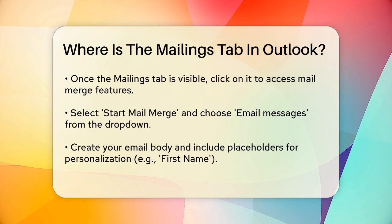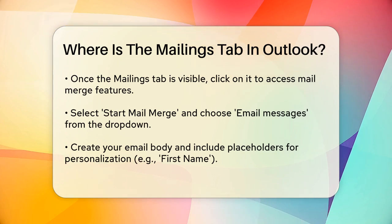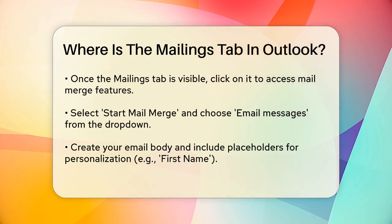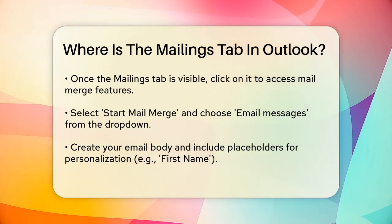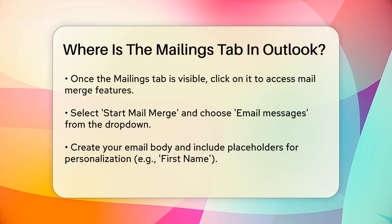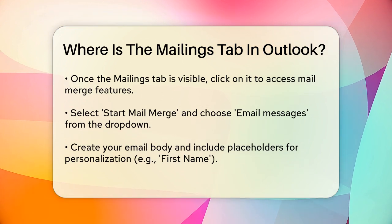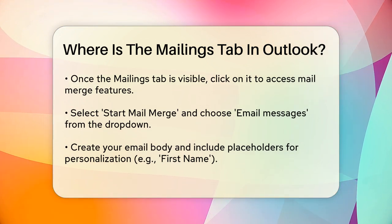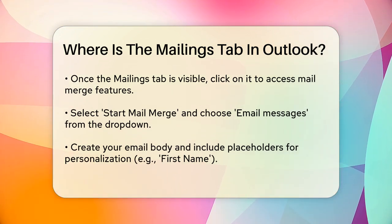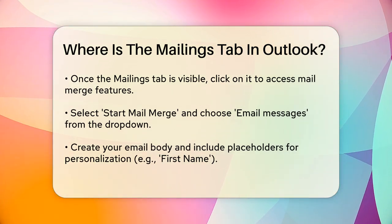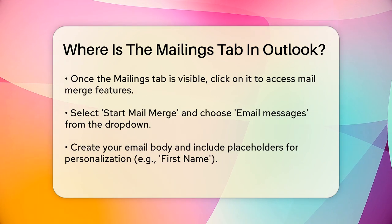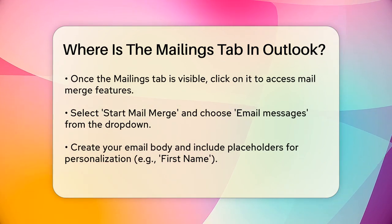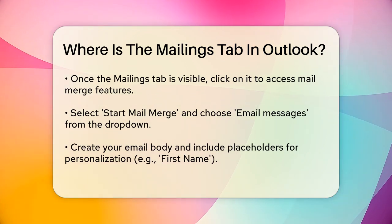If the Mailings tab is already there, you can simply click on it. Then click the Start Mail Merge button and select Email Messages from the drop-down menu. This will allow you to create your email template and add placeholders for personalization.